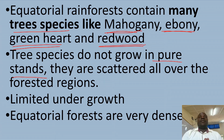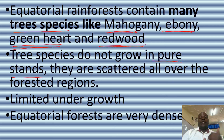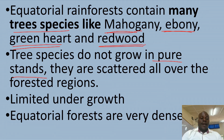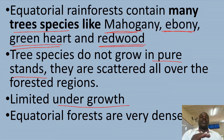This means you cannot easily locate the same tree species in one area — you need to move from here and there. Mahogany is not in one area, ebony is not in one area; they are scattered everywhere. And this is a problem when it comes to harvesting. There is also limited undergrowth — the short vegetation and grass that grows in the middle of the forest is limited.